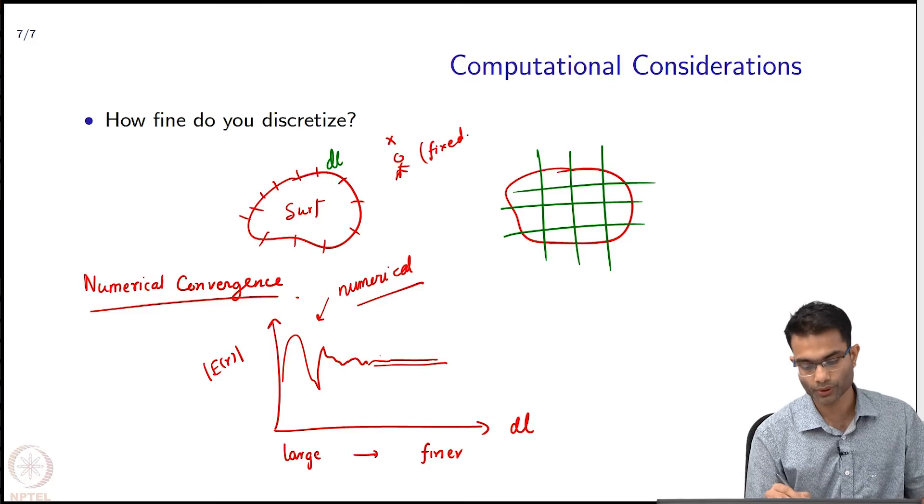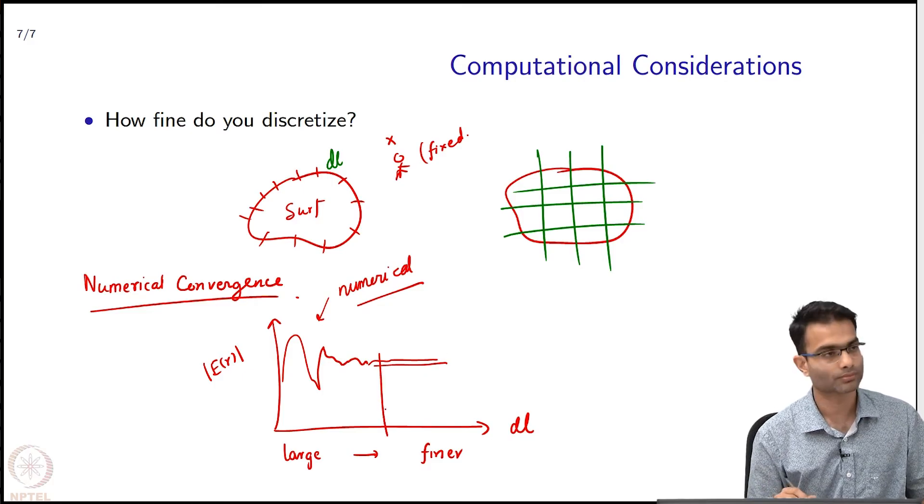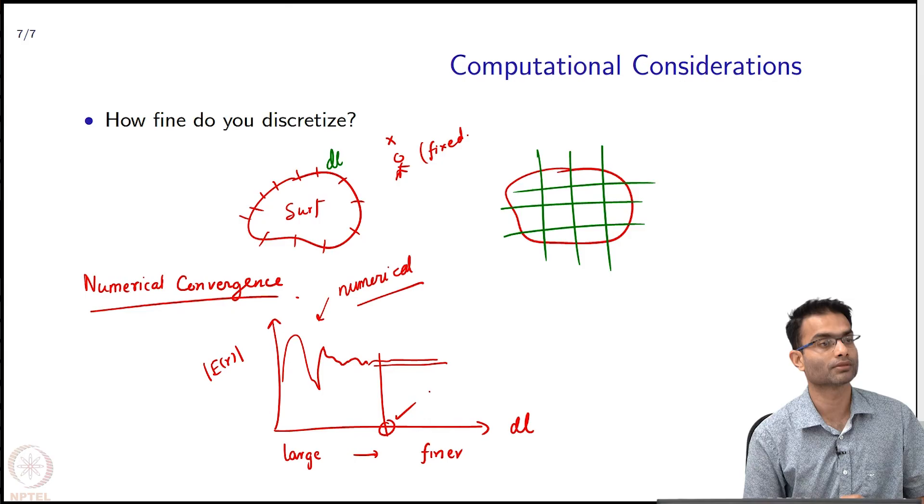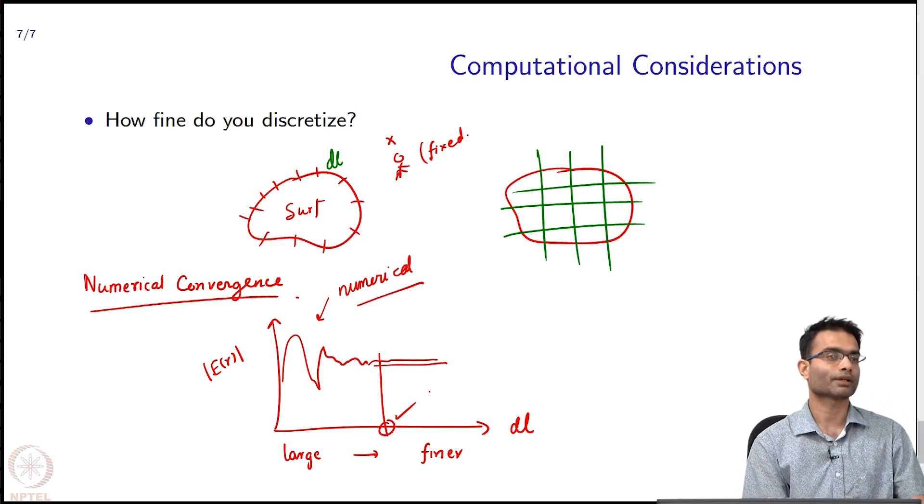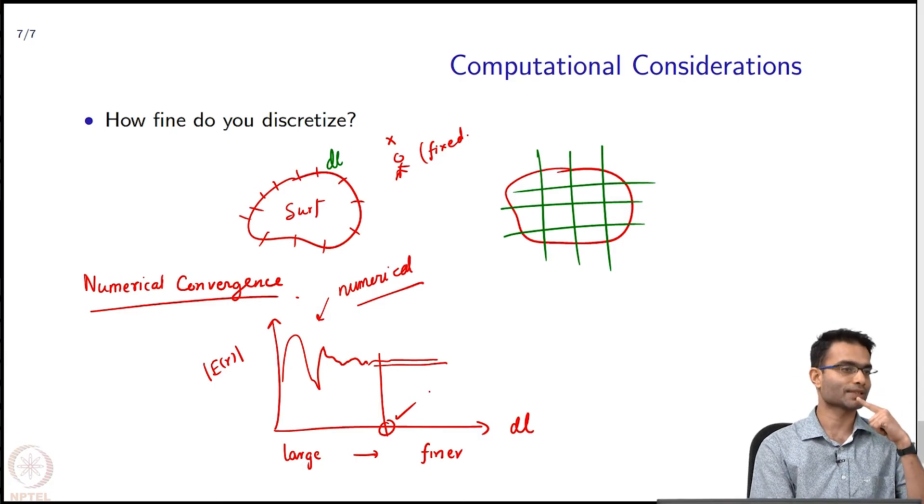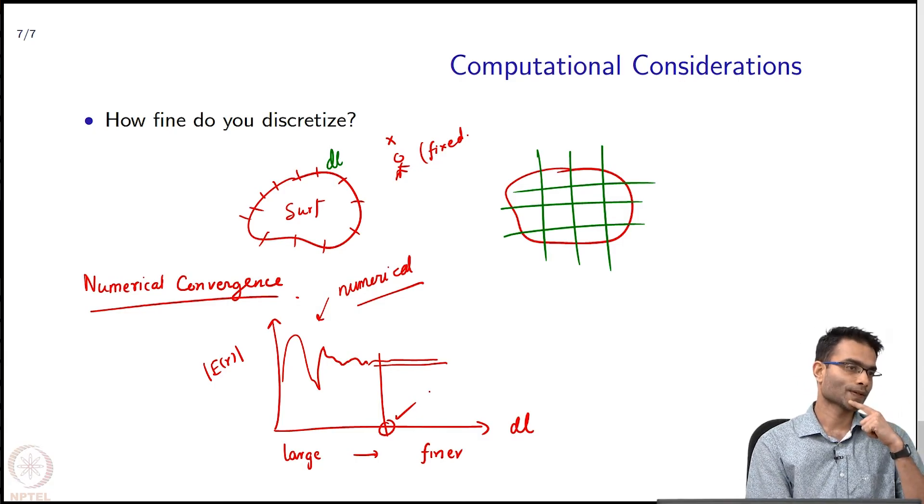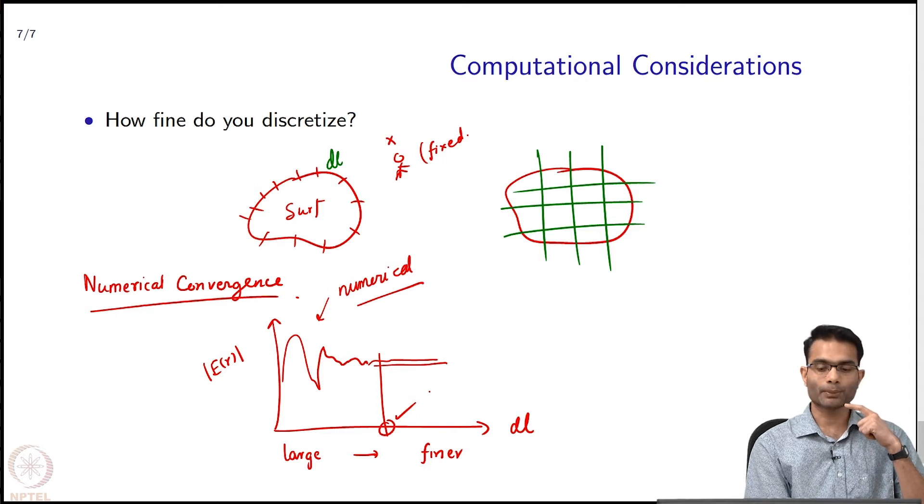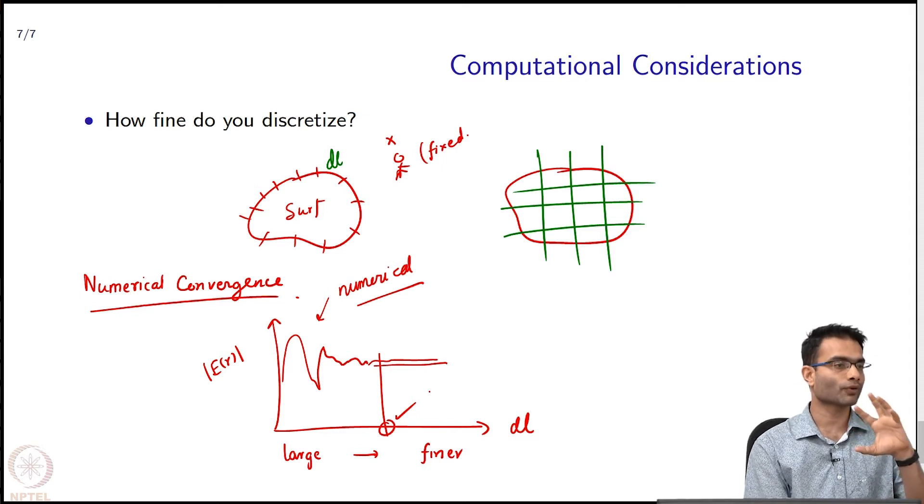So what should you do? You should look for this point where it has stabilized and say that this is the correct value. So in any code that you write in computational EM, you should have done one numerical convergence test and typically not just for one point, but for a few points.